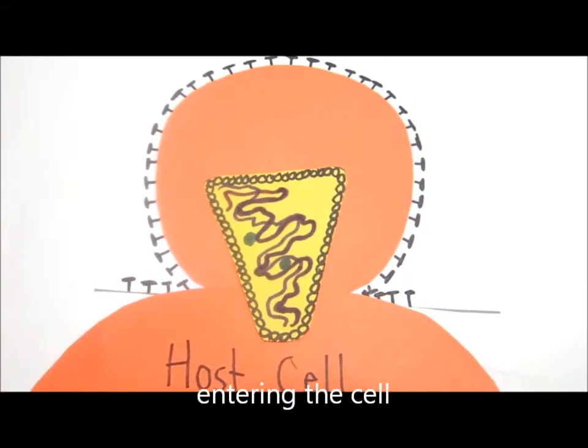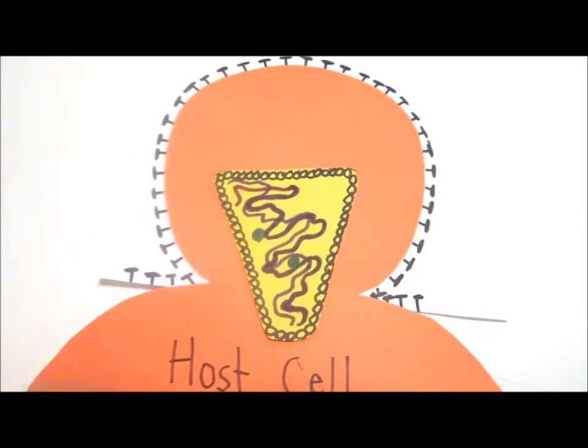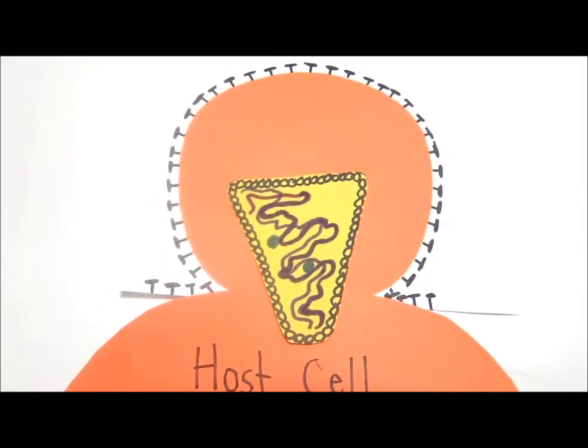HIV enters the cell by attaching itself to at least two surface receptor proteins on T lymphocytes or other white blood cells. The primary receptor is CD4.